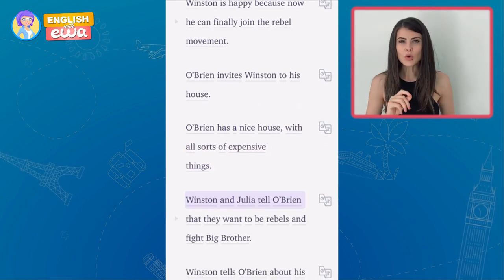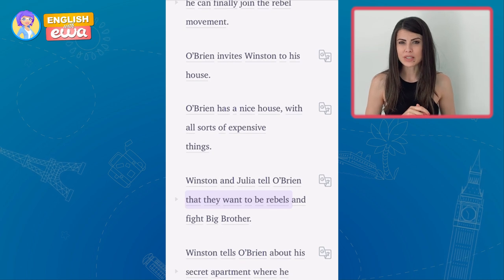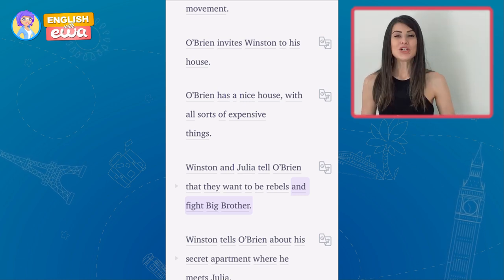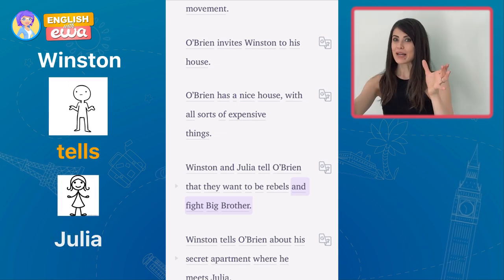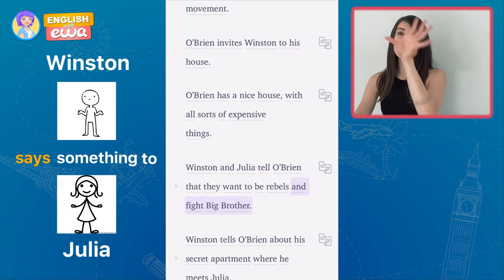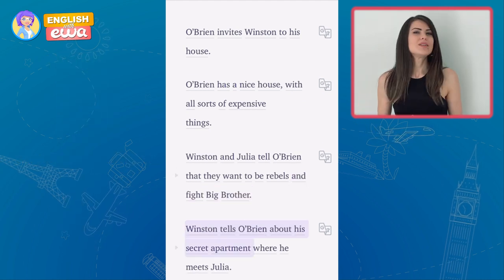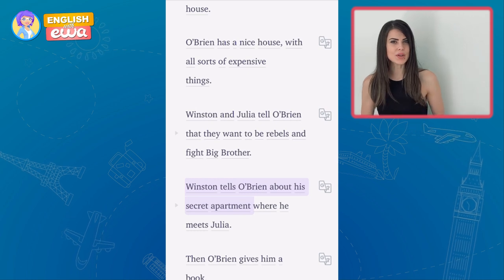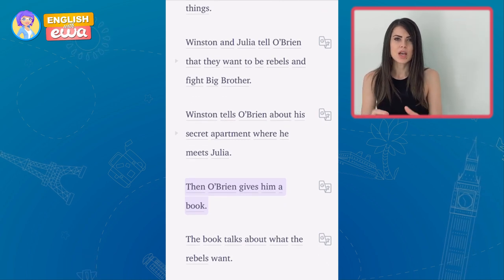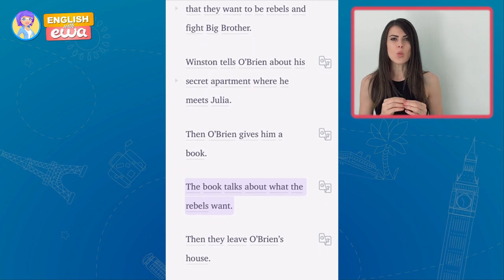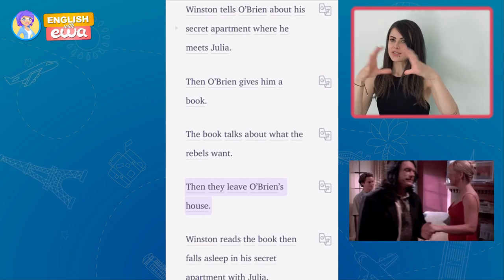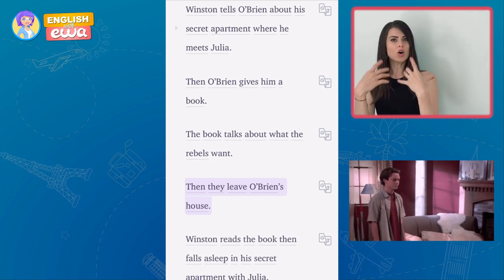Winston and Julia tell O'Brien that they want to be rebels and fight Big Brother — not physically fight, but be against the government. Note: you tell someone something, but you say something to someone. Winston tells O'Brien about his secret apartment where he meets Julia. Then O'Brien gives him a book about what the rebels want. They leave O'Brien's house — after their conversation, they told him all their secrets and left.